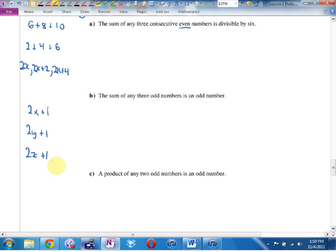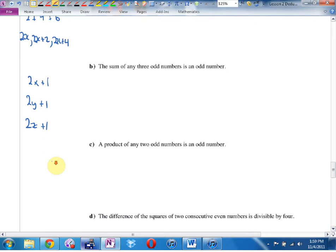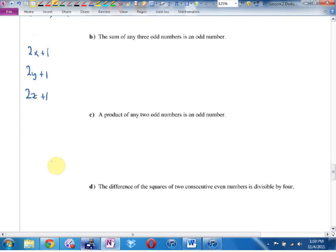Again, if you're finding this tough, you're normal. c says the product of any two odd numbers is an odd number. Try and prove that two x plus one multiplied by two y plus one will always be odd. Try foiling that out and see what you notice.